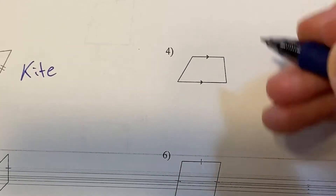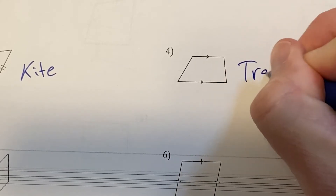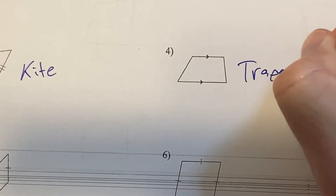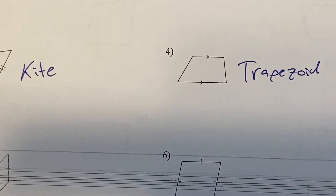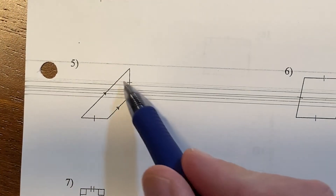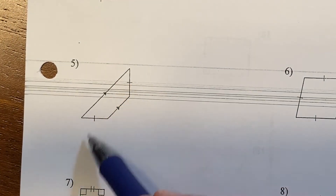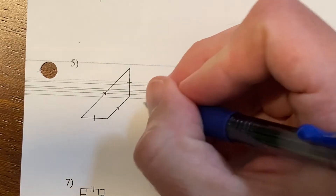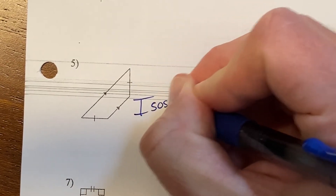This one has one set of parallel lines — this is a trapezoid. It says one set of parallel lines, but it also has legs that are congruent, so it's not just a trapezoid — this would be an isosceles trapezoid.